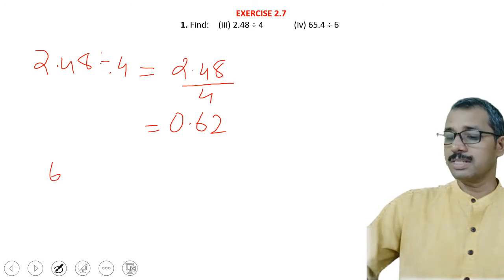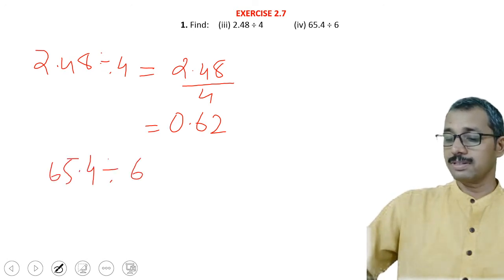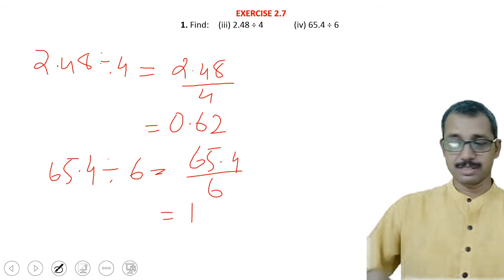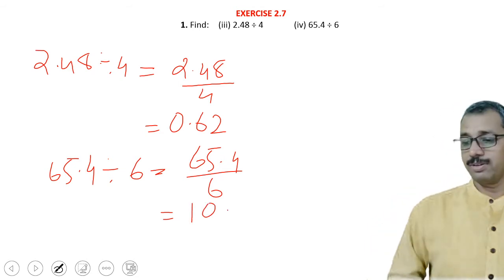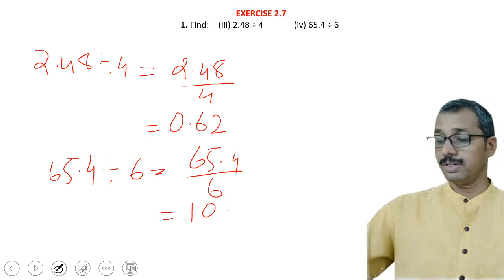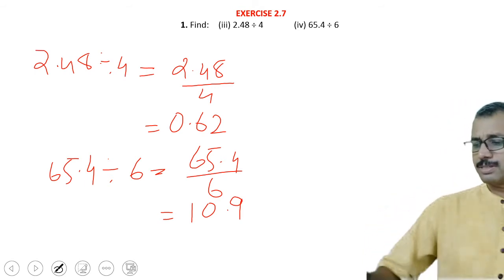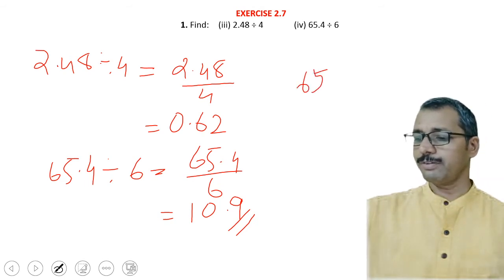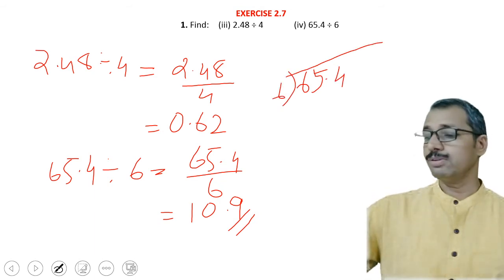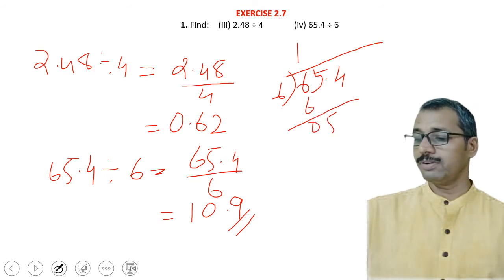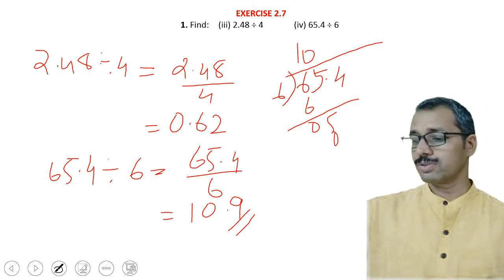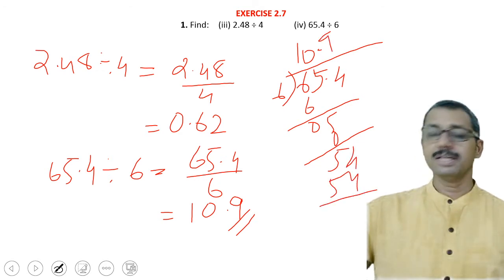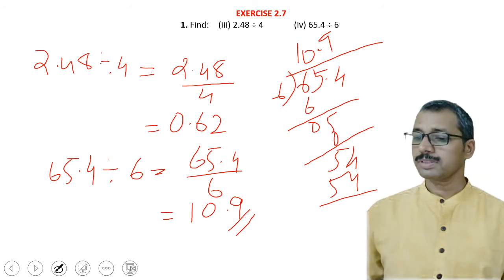The next example is 65.4 divided by 6, equal to 65.4 upon 6. In 6, 6 ones are 6, so 1. In 5, 6 will not go, so 0. Then the decimal point — that is very important. Then 54: 6 nines are 54, so 9. There is only one decimal place, so the answer is 10.9.